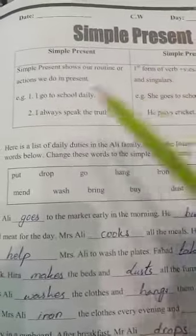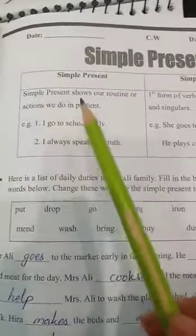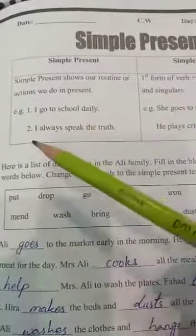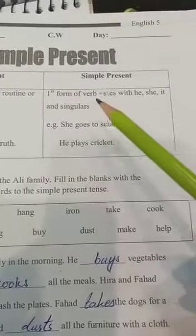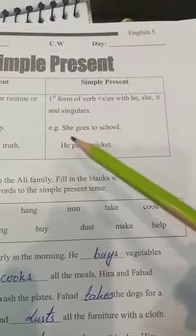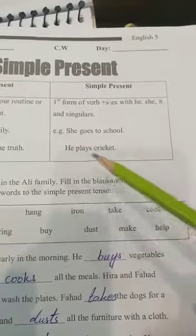Simple Present. Simple Present shows our routine or action we do in present. Just like I have told you: I go to school daily, I always speak truth. And what is the formation? First form of verb plus S or ES with he, she, it, and singular. She goes to school, she plays cricket.